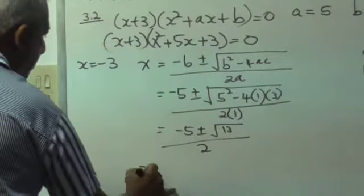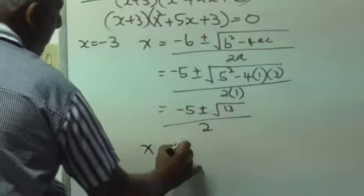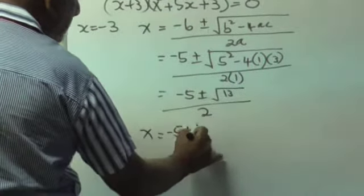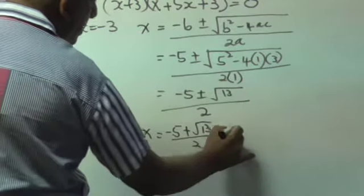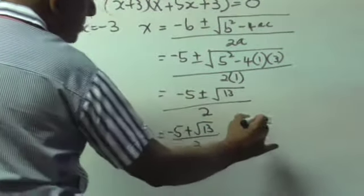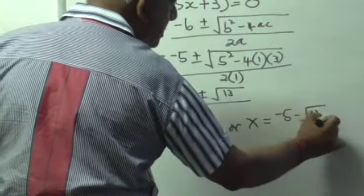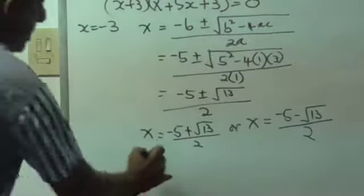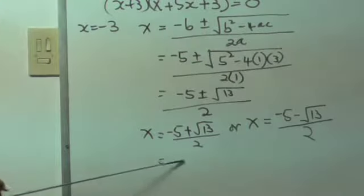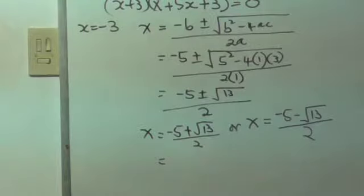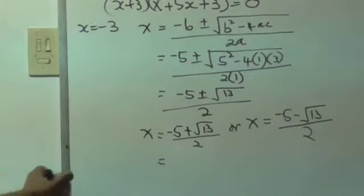x is equal to minus 5 plus the square root of 13 all over 2. Or, x is equal to minus 5 minus the square root of 13 all over 2. And this will give you a final answer of, I will tell you just now, if you put it in your calculator, you'll get minus 0 comma 7. I'll just work to one decimal place.